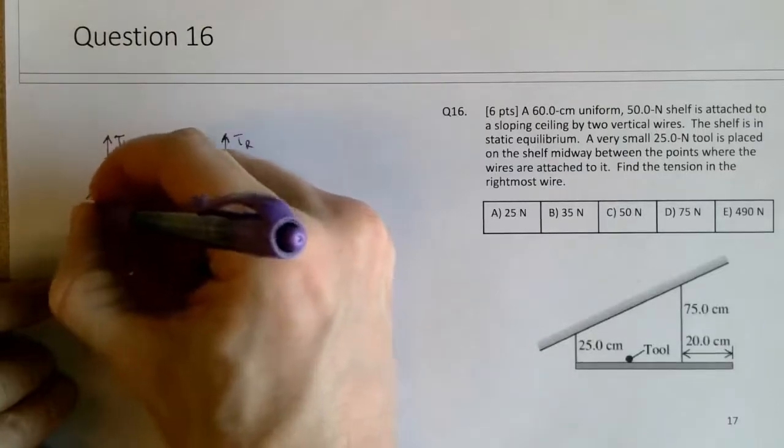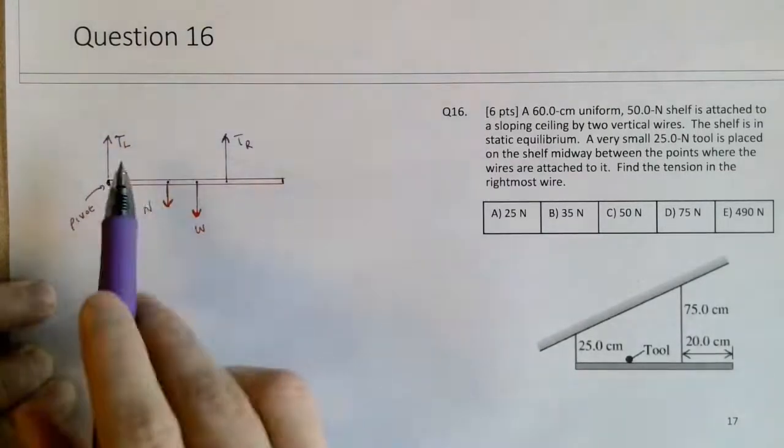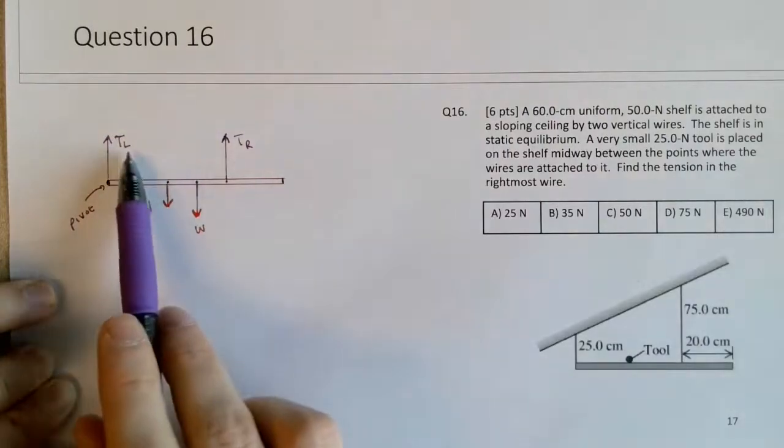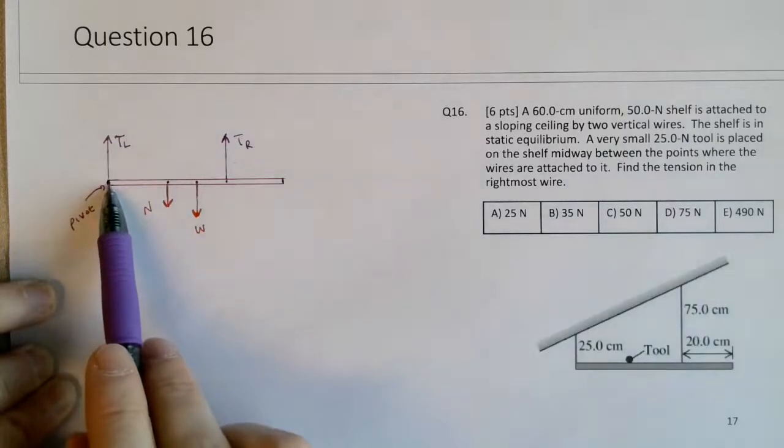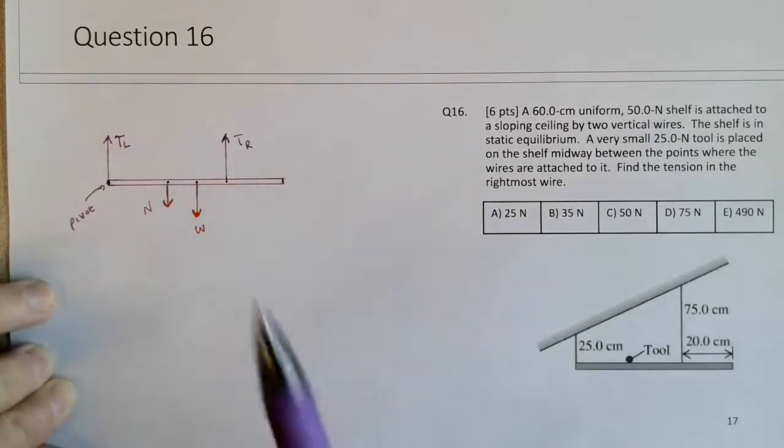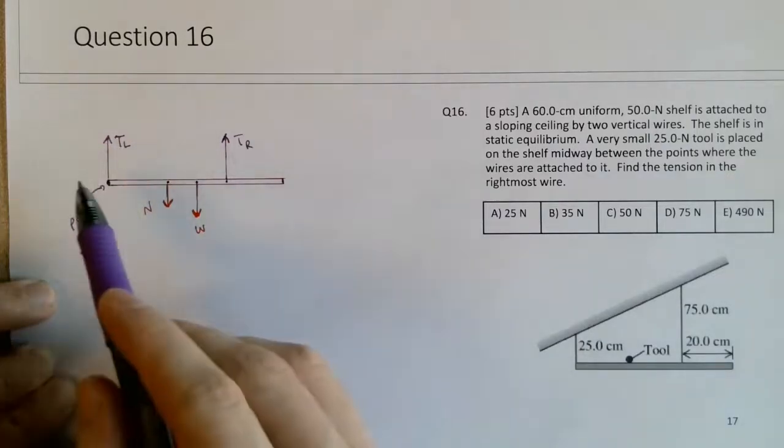Because that allows me to ignore, not ignore, but in a sense the torque applied by the tension in the leftmost wire at the pivot point is zero. So it doesn't come into the torque analysis, which allows me not to think about it. That's when I say ignore.